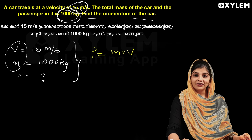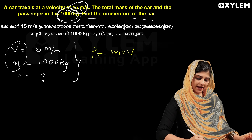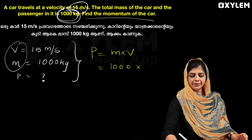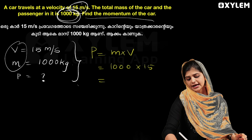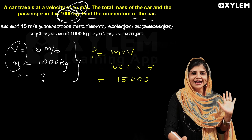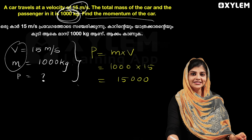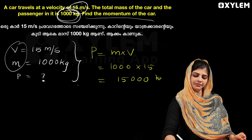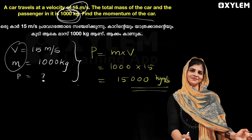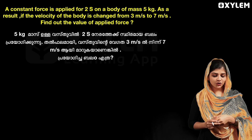Our equation is P is equal to mass into velocity. Applying the values: mass into velocity. The kilogram meter per second is the unit of momentum. So this is the answer to this question.